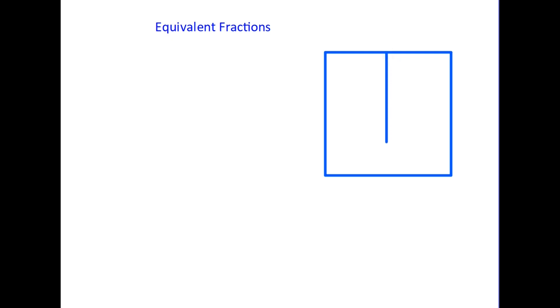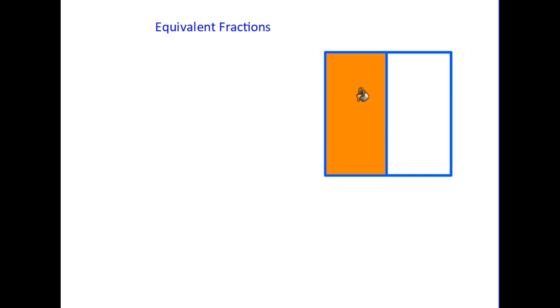Here's a square. Let's look at one of the simplest fractions of all. I am simply going to divide the square into two equal parts, and therefore the left-hand side part that's now being shaded is one half of the square. So we know that we can write that quite simply as one over two — that is one half.